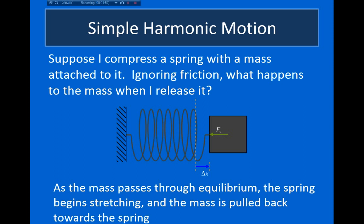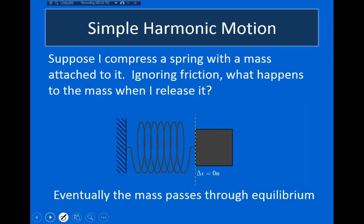However, when the mass comes to rest, the spring is still stretched, and the mass therefore still has an acceleration that points to the left. So the mass will then begin to accelerate back towards its equilibrium position. But just like before, because the acceleration always points to the left, when the mass reaches its equilibrium position, it will now have a velocity that points to the left. So the mass will pass through its equilibrium position and begin moving to the left.